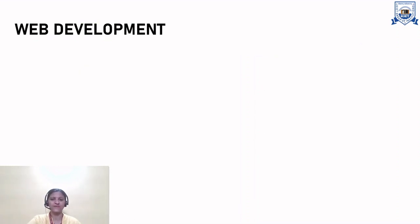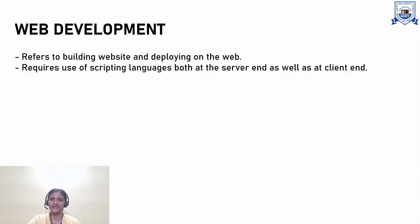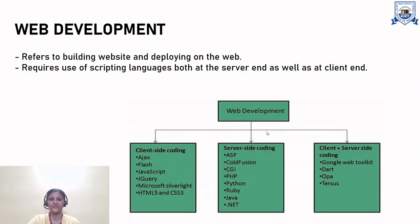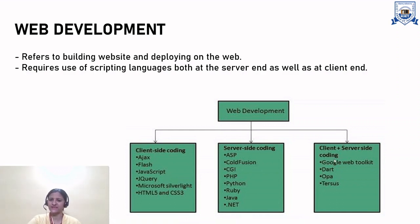Web development refers to building websites and deploying them on the web. It requires use of scripting languages both at the server end and at the client end. Client-side coding includes Ajax, Flash, JavaScript, jQuery, HTML5, and CSS3. Server-side coding includes ASP, ColdFusion, CGI, PHP, Python, Ruby, Java, and .NET. Client-plus-server-side coding requires Google Web Toolkit, Dart, OPA, and Tarsus.